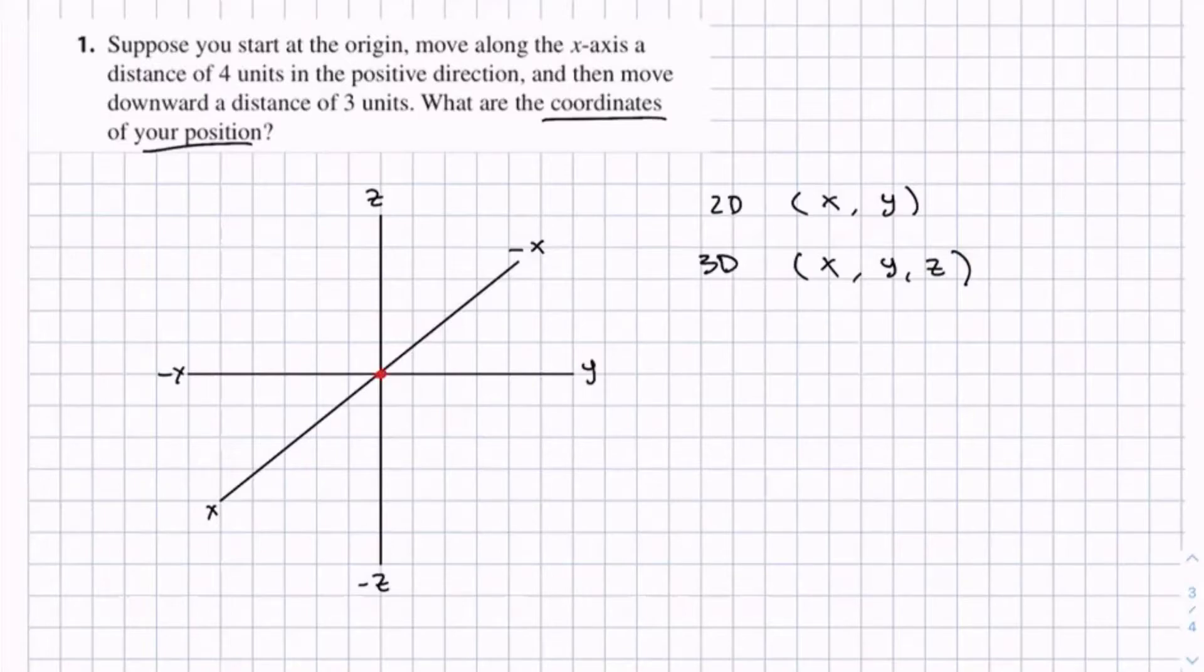We move along the x-axis a distance of 4 units in the positive direction. So the positive direction is going this way.